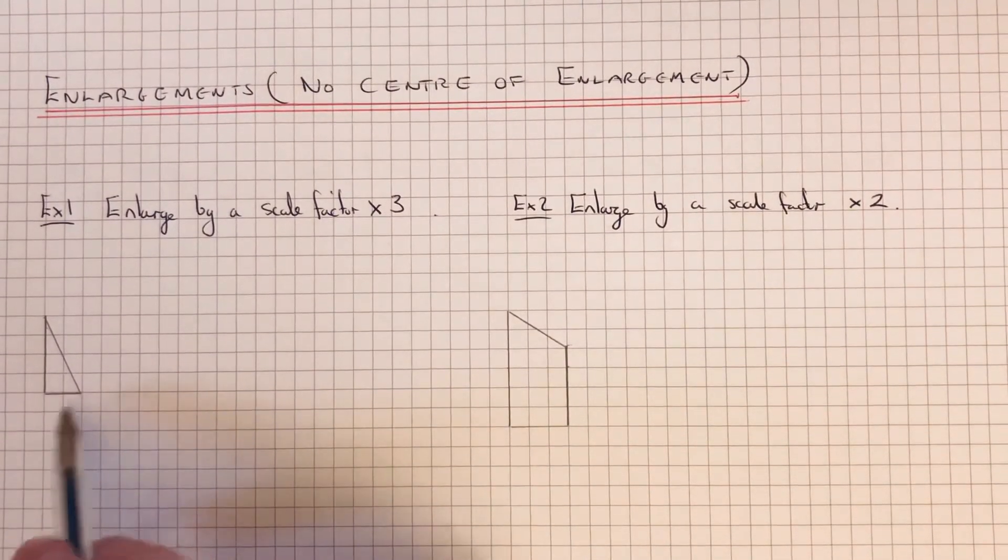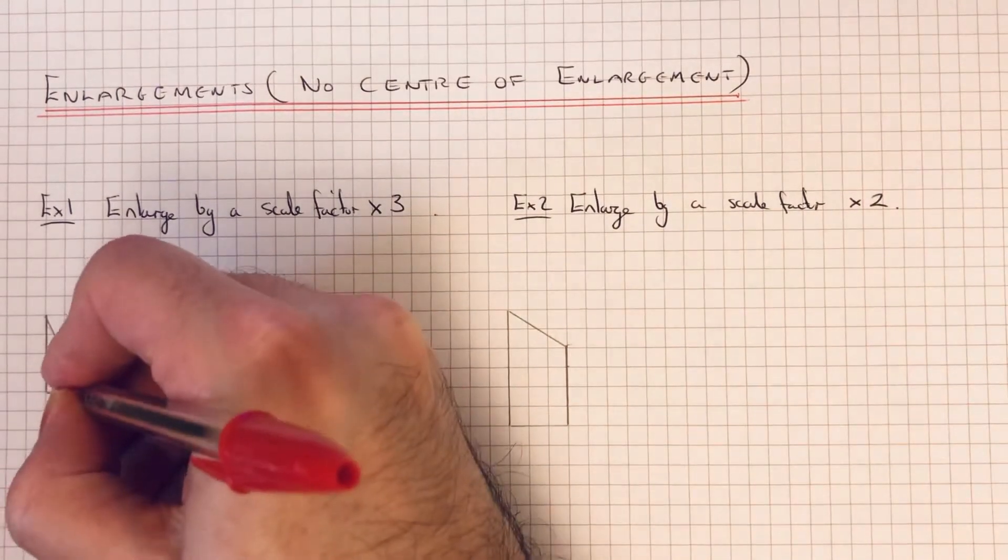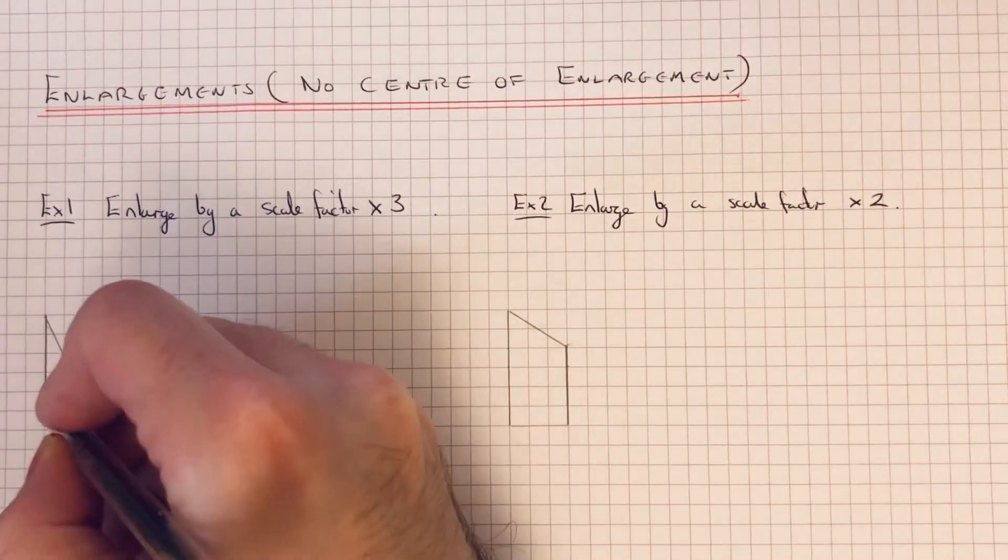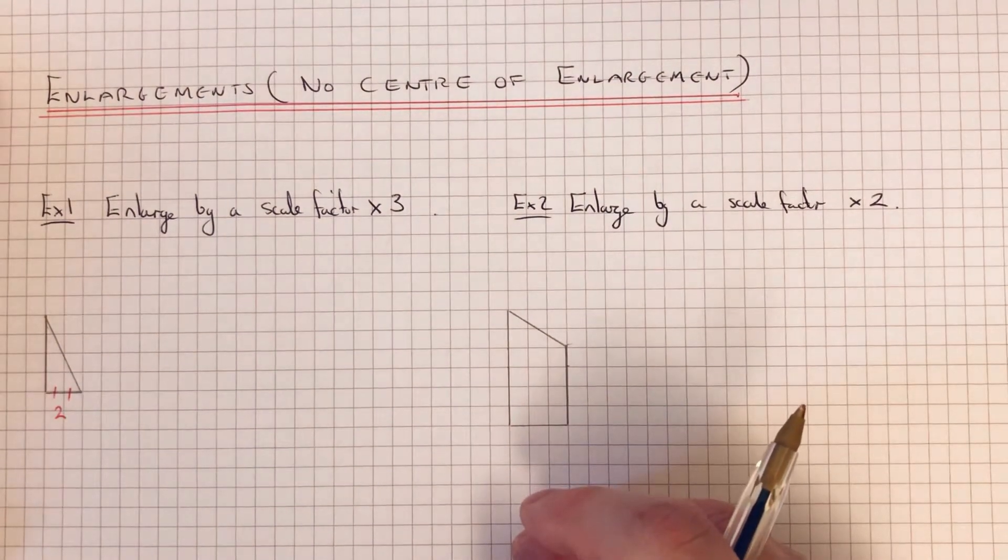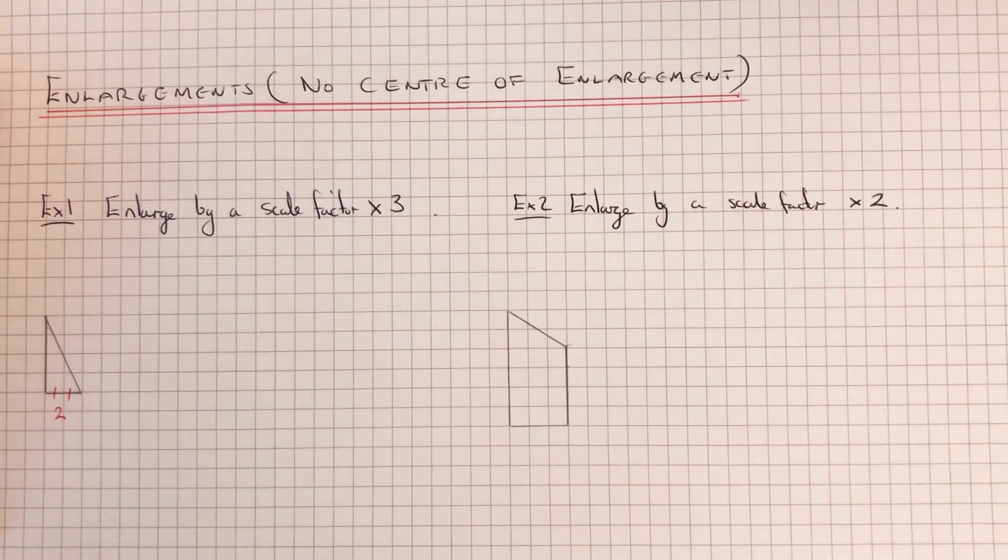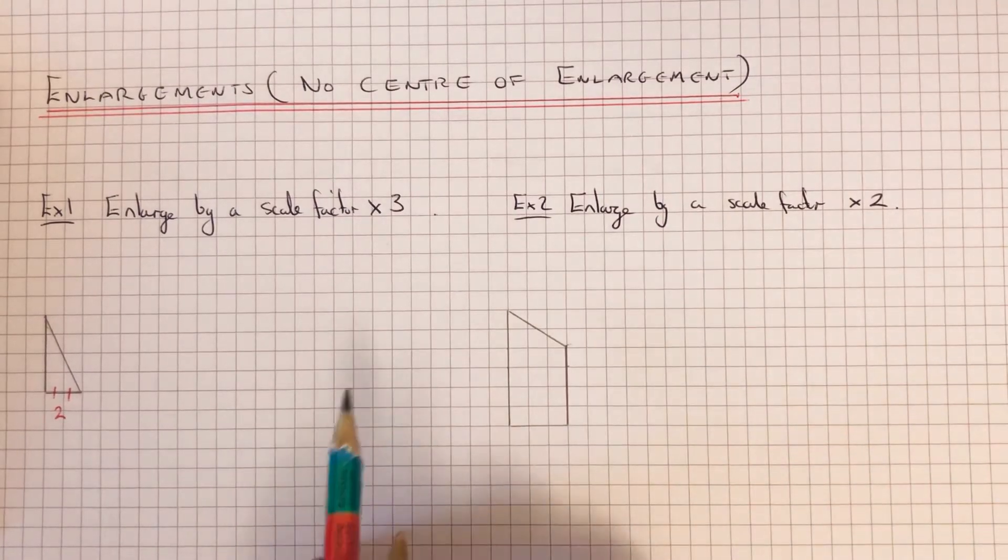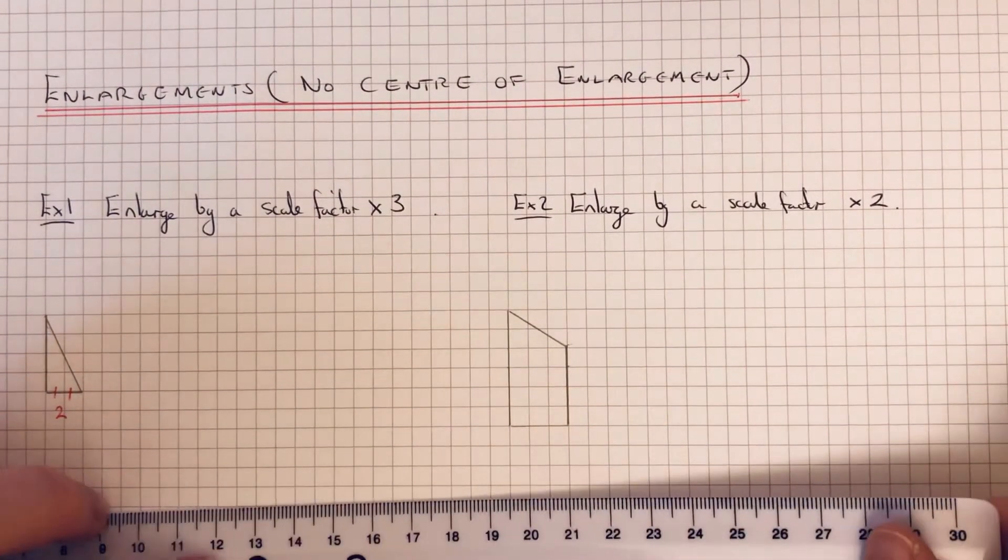Okay, so let's start off with the base of the triangle. The base is two squares going across. So if we times that by 3, 2 times 3 is 6. So we need to go six squares across on our enlarged shape.